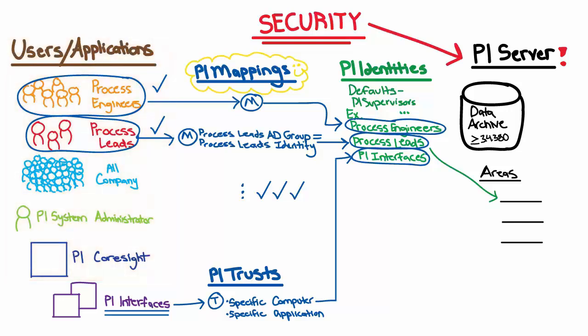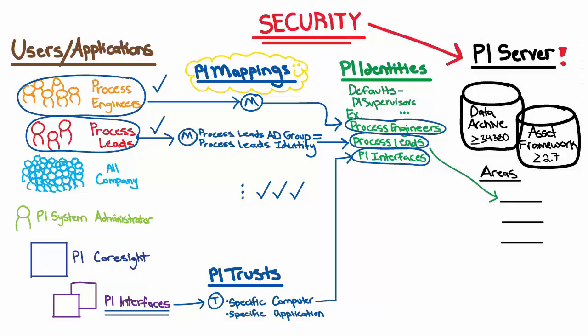We've been focusing on the data archive, but the asset framework component of the PI Server is very similar. With the asset framework, starting with versions 2.7 and later, there are also mappings and identities, and you can use these to set permissions on the different areas in the asset framework as well. Make sure to check out the rest of our security videos to see how to set this up in your PI System today.